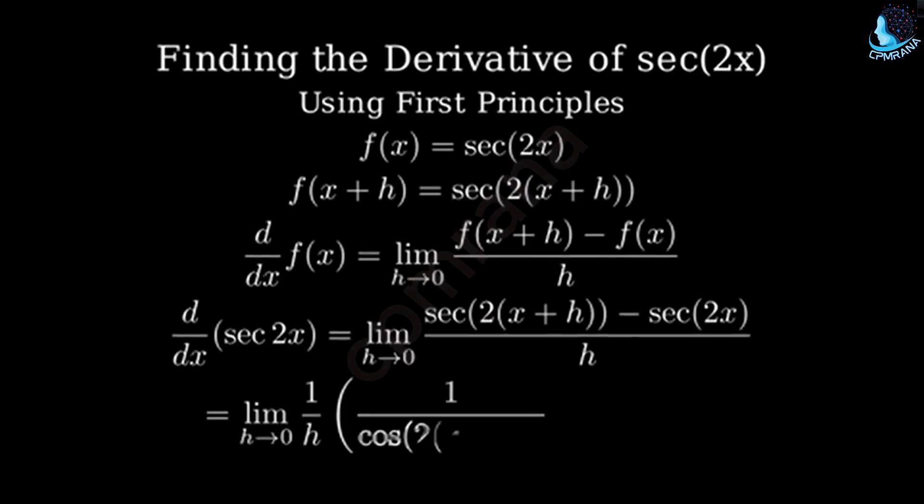Since secant is 1 over cosine, we can rewrite this as the limit as h approaches 0 of 1 over cosine of 2x plus h minus 1 over cosine of 2x, all divided by h.